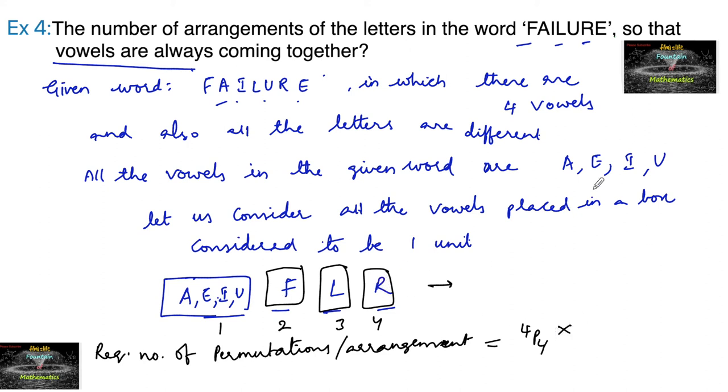And also we must note that in the first box containing all the vowels, inside the box the vowels can be interchanged. Like A, E, I, U is one way. And again you can also write that E, I, U, A - this is also another way. And even you can write U, E, A, I - this is also one pattern. Like how many ways you can write these letters? That's four factorial. Because four letters are there. Number of permutations of four different things taken four at a time - 4P4. So along with this arrangements, we need to arrange inside the box also. That comes under again 4P4.